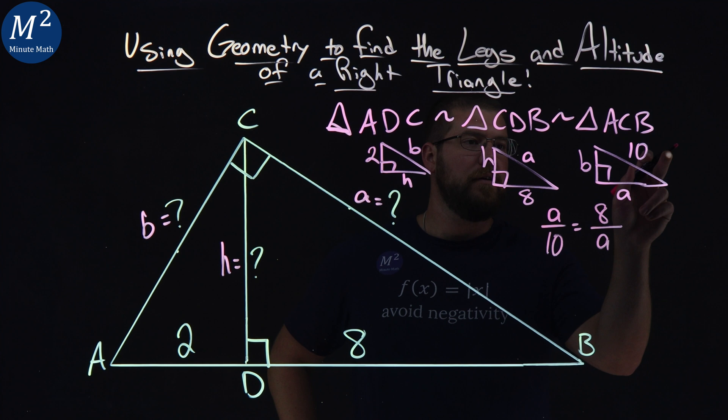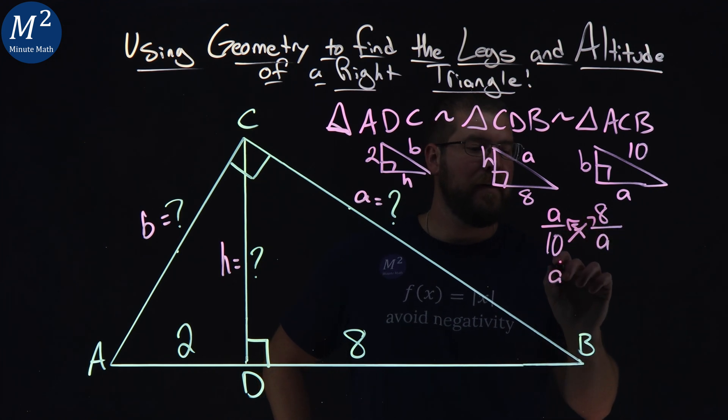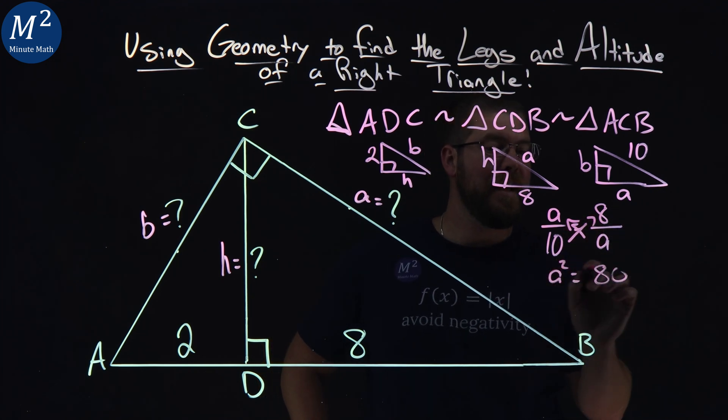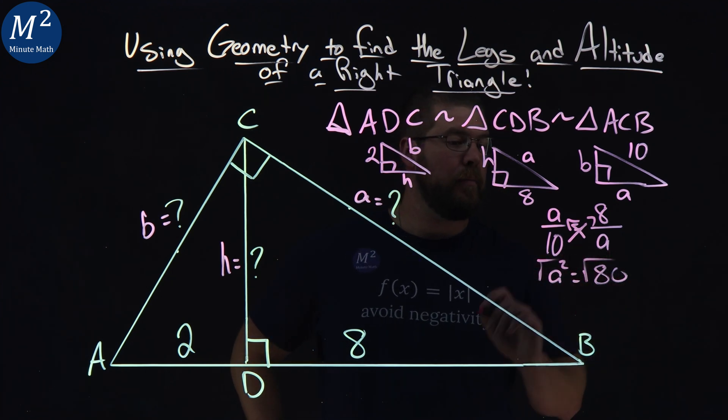So we can say that a over 10 is equal to 8 over a. Hypotenuses over hypotenuses, long leg over long leg. Cross multiply right there. We have a squared equals 80. Then we want to take the square root of both sides.